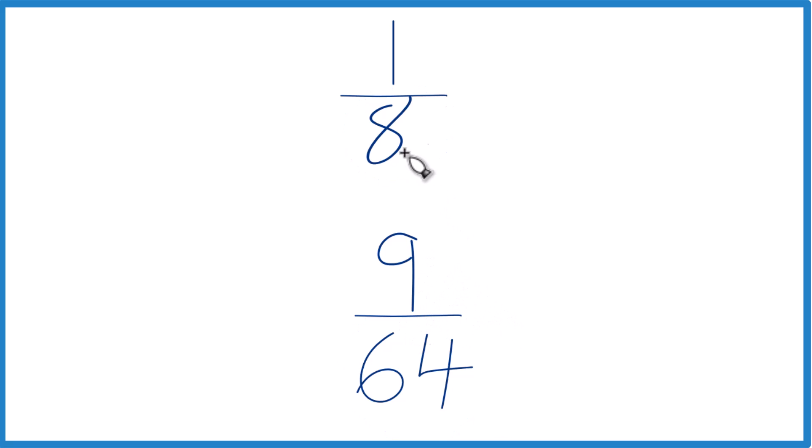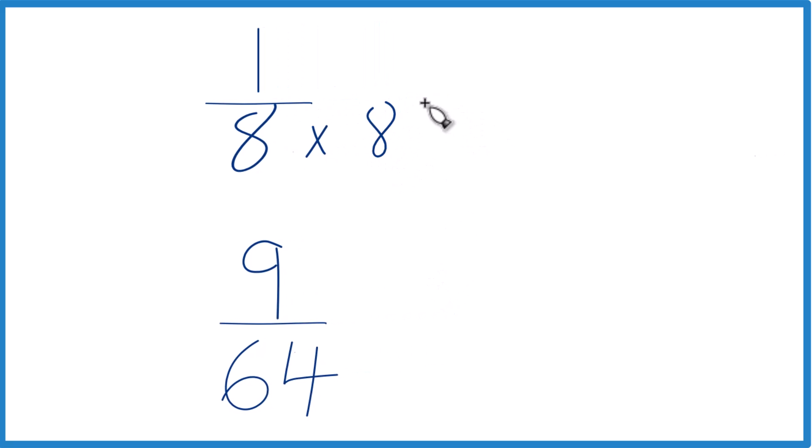So 8 times 8, that's 64. So let's just multiply this 8 times 8 here. That equals 64. And then down here we already have 64. So let's just call this 9/64ths down here.